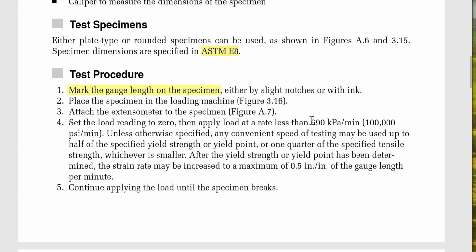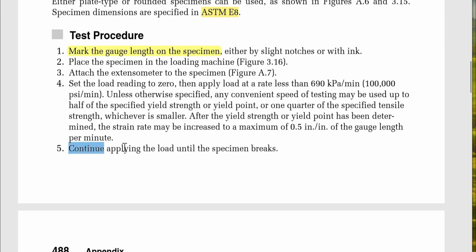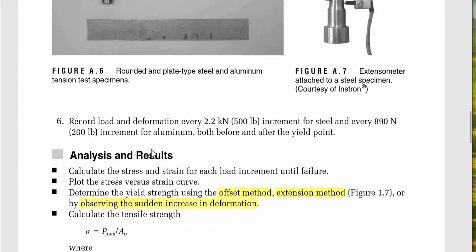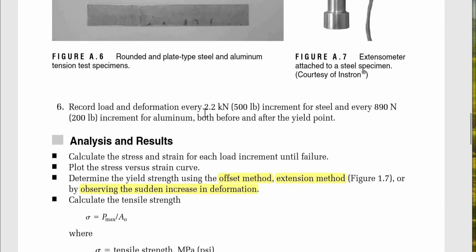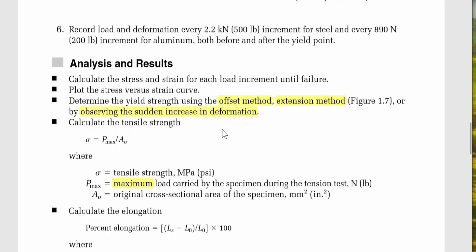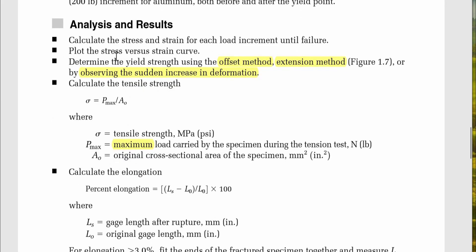Apply load at a rate less than 690 kilopascals per minute unless otherwise specified. Any convenient speed may be used up to half of the specified yield strength or one quarter of the specified tensile strength, whichever is smaller. After the yield point has been determined, the strain rate may be increased to a maximum of 0.5 inch per inch of gauge length per minute. Continue applying load until the specimen breaks, and record load and deformation every 2.2 kN (500 lb) increment for steel and every 980 N (200 lb) increment for aluminum.